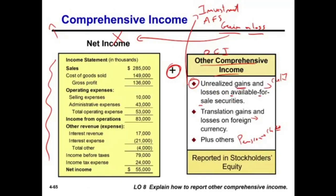If we have gains from AFS securities, that increases equity; if we have losses, it reduces equity. We're also going to have translation gains and losses on foreign currency. When a U.S. company operates in Europe, Japan, or South America, they translate their financials into U.S. dollars, and sometimes they have gains, sometimes losses. Those gains and losses don't go on the income statement — they go on OCI. They increase or decrease equity but bypass net income.